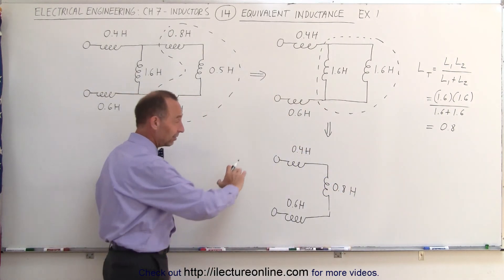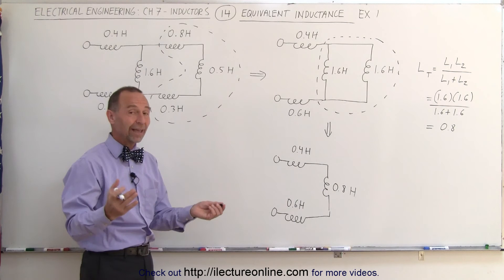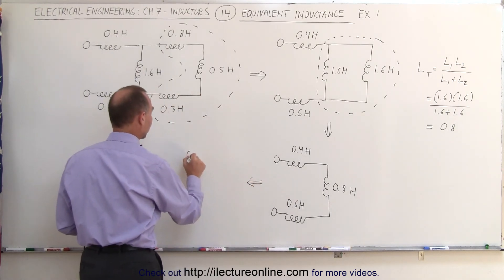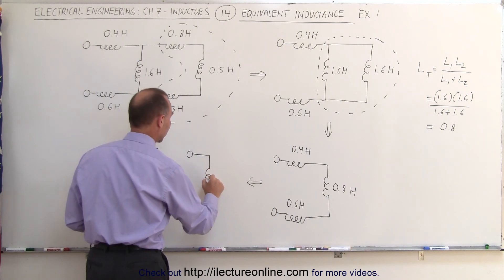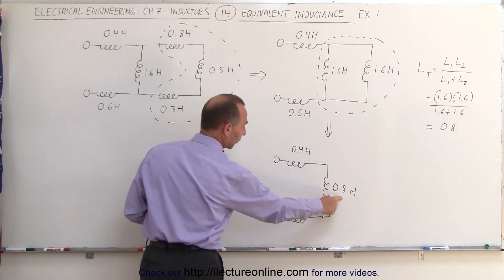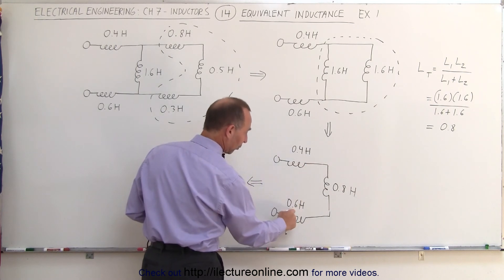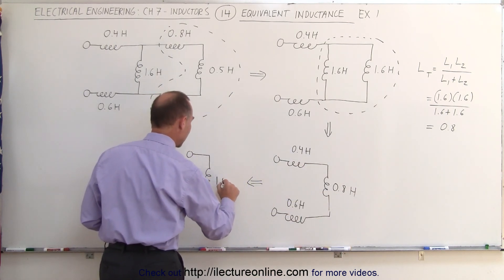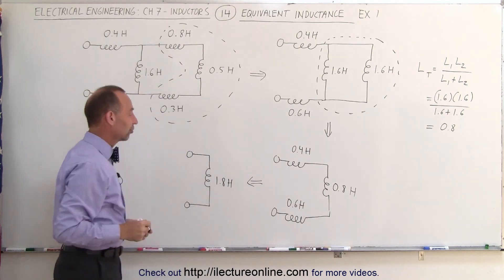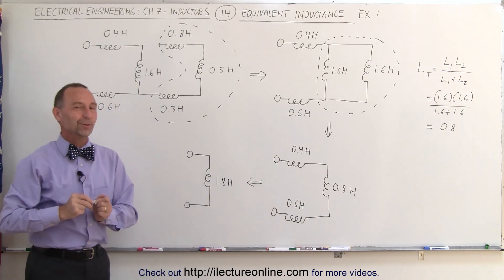Now, finally, you can see that these three are in series. All we have to do is add them together, and then we have the equivalent circuit. With a single inductor, add them together, 0.4 plus 0.6 is 1, plus 0.8 is 1.8 Henrys. And this is the equivalent inductance of this original circuit. And that's how we do that.